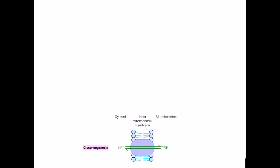Alternatively, phosphoenol pyruvate can be transported directly across the inner mitochondrial membrane to enter gluconeogenesis.